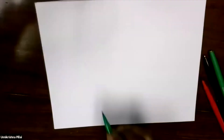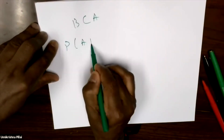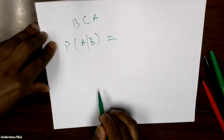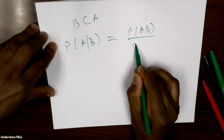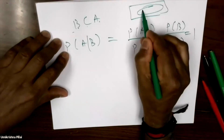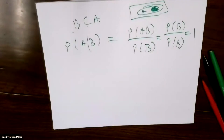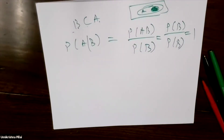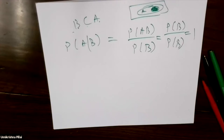What if B is a subset of A? Then P(A∩B) = P(B), so P(A|B) = P(B)/P(B) = 1. This makes physical sense: if B has occurred and B is within A, then A has certainly occurred. For example, if A is 'even number' and B is the outcome 2, then given that outcome is 2, the probability of getting an even number is 1.